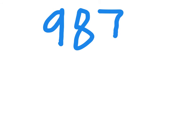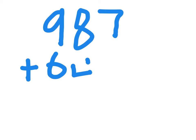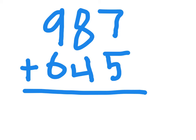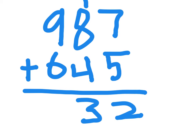I am adding nine hundred eighty-seven and six hundred forty-five. Seven plus five is twelve. Carry the one, eight plus one is nine, nine plus four is thirteen. Carry the one, nine plus one is ten, and ten plus six is sixteen. The answer is one thousand six hundred thirty-two.